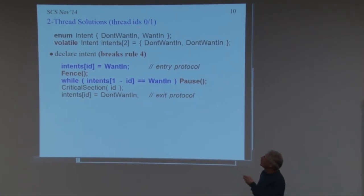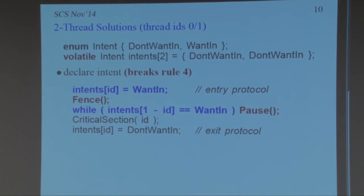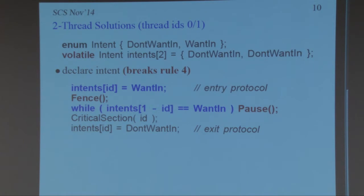Let's build an algorithm. Start with two values: want to go through the doorway, or don't. Each thread gets a bit. You set it to 'yes, I want in,' then check the other person. If they want in, you wait for them to finish. That's the basic idea — but it absolutely doesn't work, because if both arrive simultaneously and set their bit, they'll both wait for each other forever, breaking rule four: you go first, no you go first, endlessly.